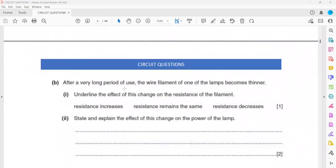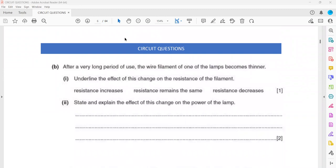The last part, after a long period of use, the wire of a filament of one of the lamp become thinner. Underline the effect of this change on the resistance of a filament. How the area affect the resistance, it will increase, decrease or stay safe. You can use the screen annotation to circle.